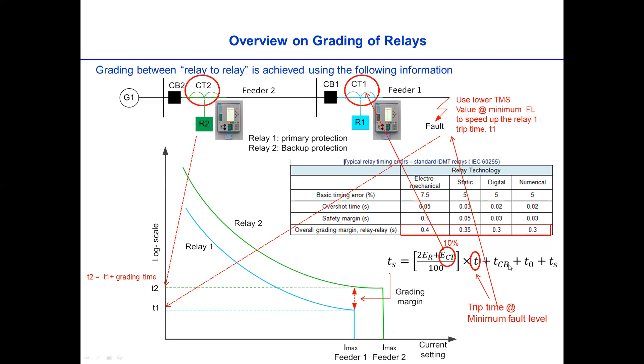And then the next one is what we need to know is the TCB. The TCB, the trip time of the circuit breaker, each circuit breaker we have. So we need to find out how much. Usually it is 50 milliseconds.